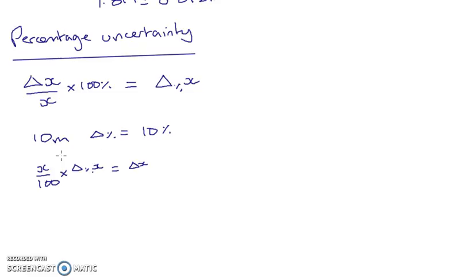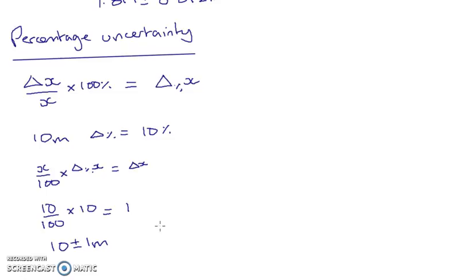In our example: 10 metres divided by 100, multiplied by 10%, gives 100 ÷ 100 = 1. So our final answer is expressed as 10 plus or minus 1 metre. We've got no decimal places, so we're in the units column — and the uncertainty is in the units column as well. I hope that was useful — leave any feedback in the comments, and I'll get going with our more complicated uncertainties video next. Thank you very much.